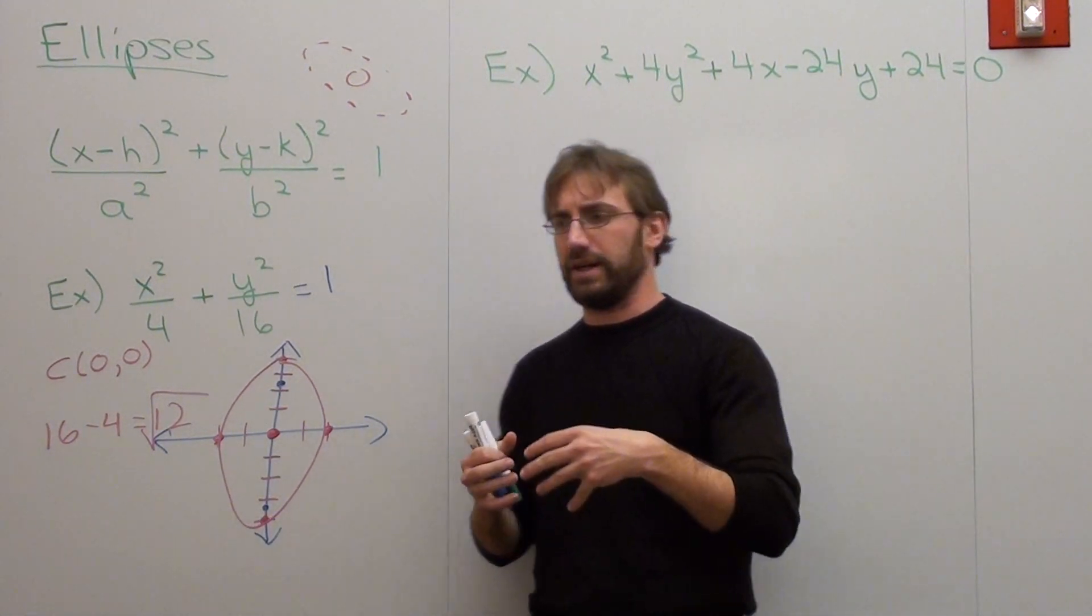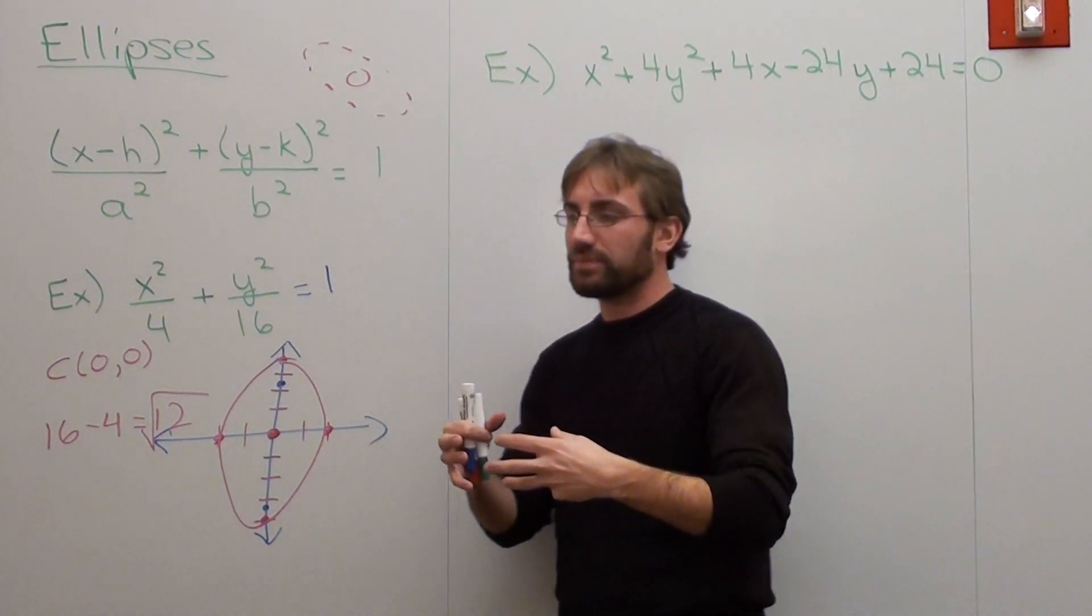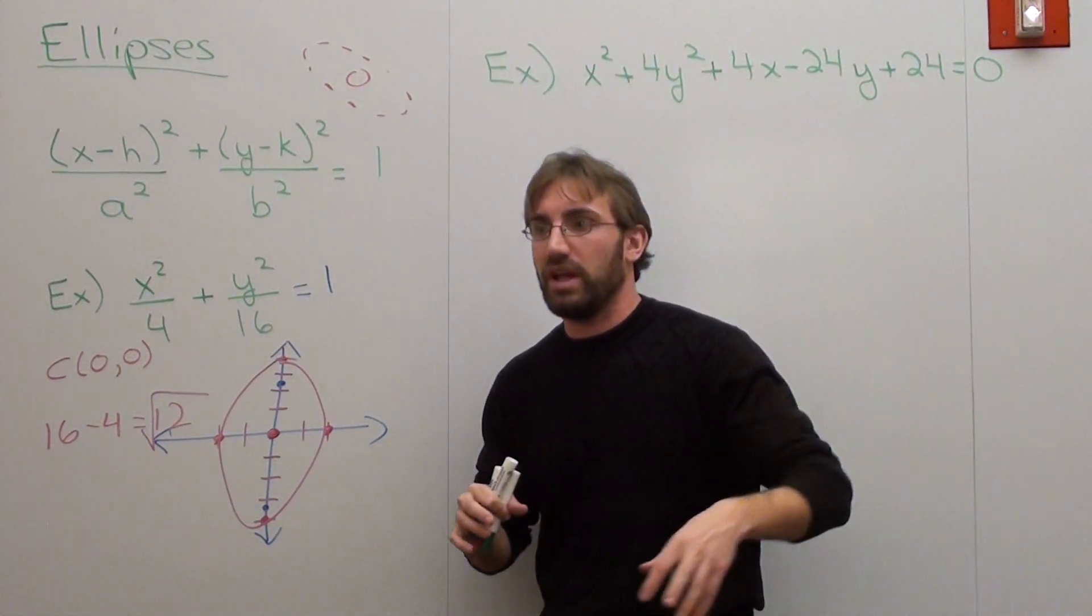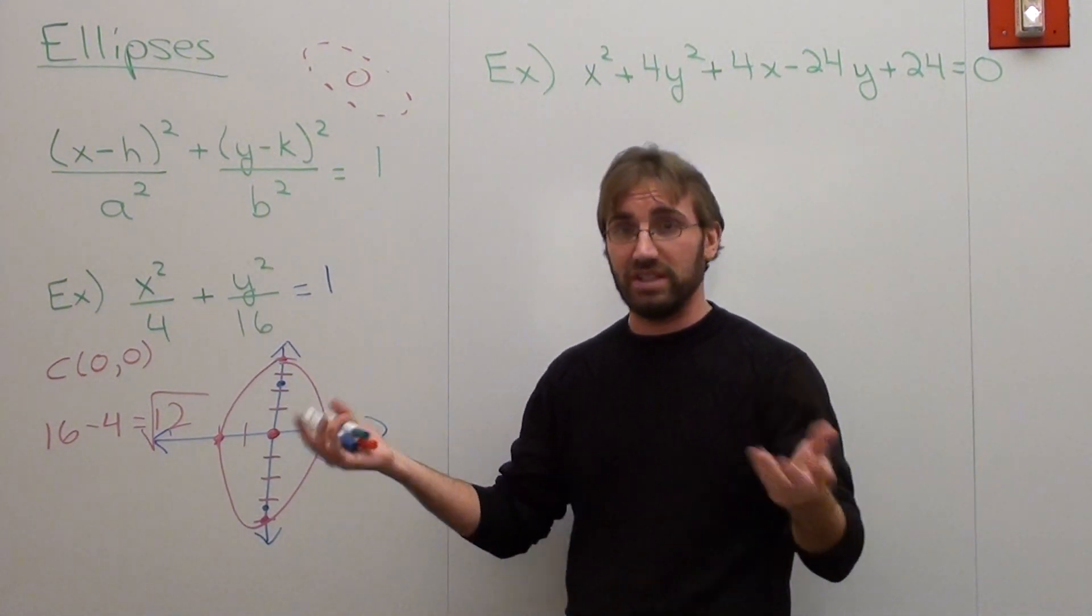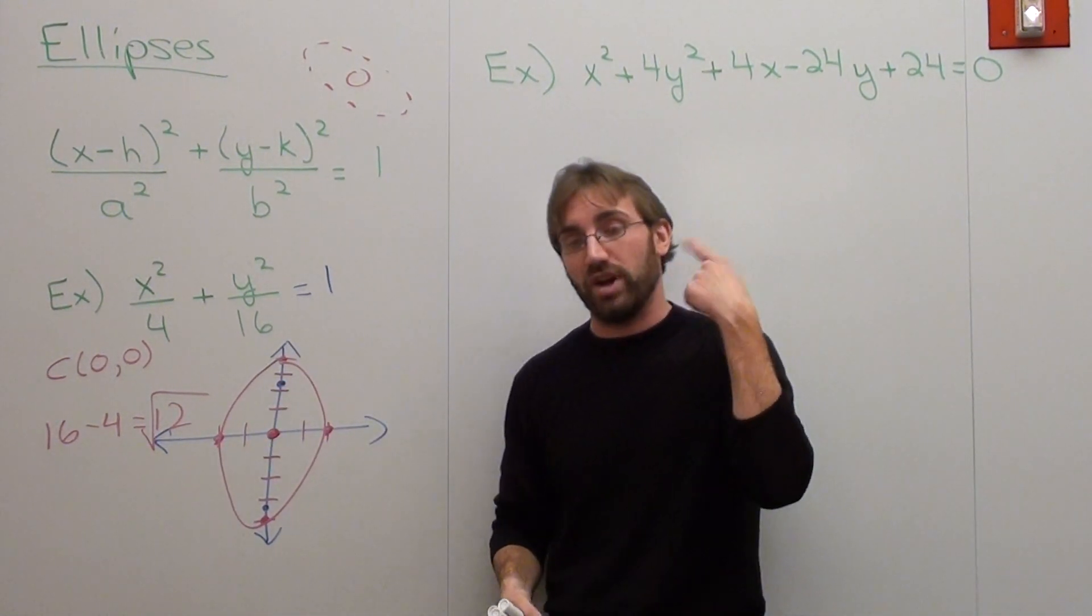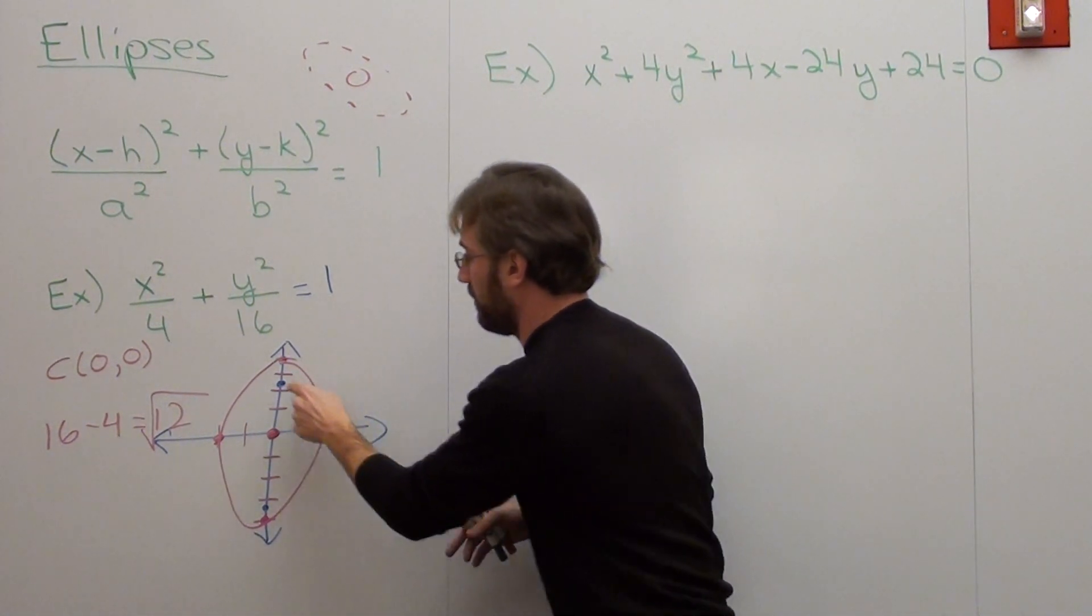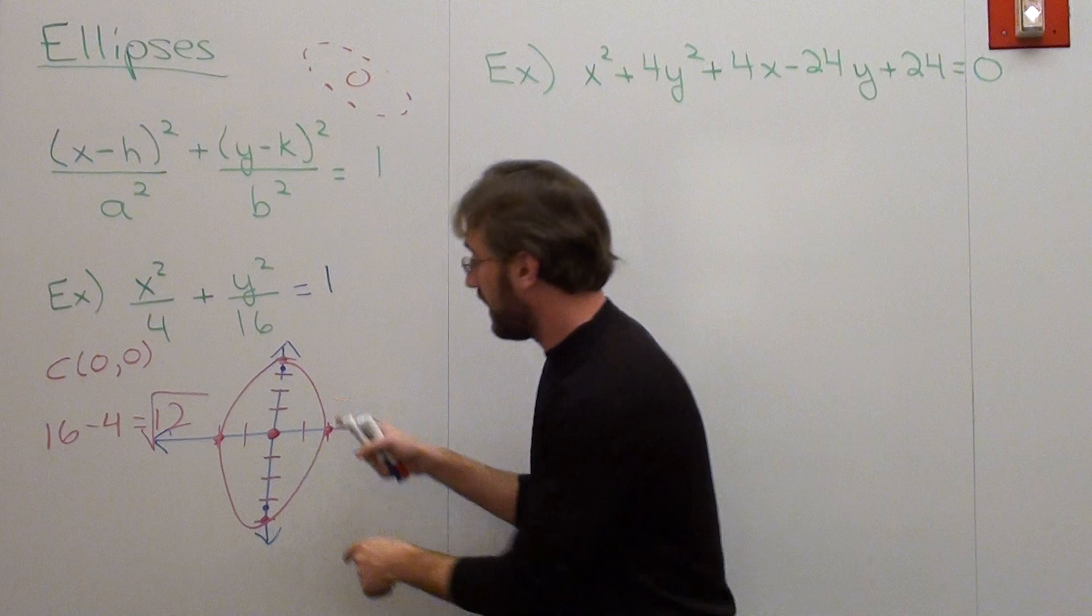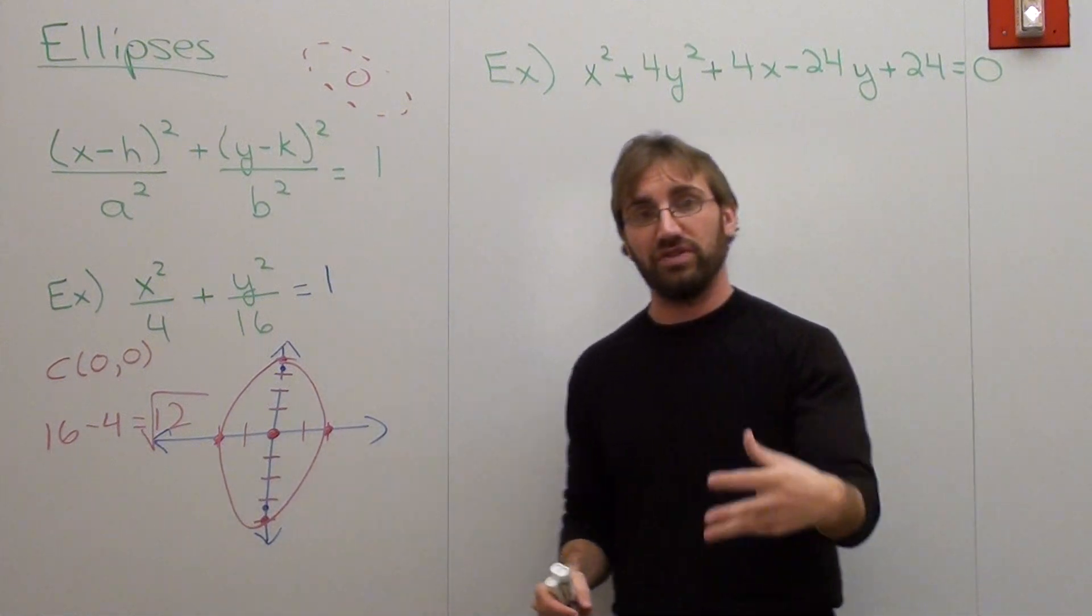And foci are actually pretty interesting. What they determine is, here's an example. If you're watching a football game, and two football teams are playing, and they're in the other team's end zone, the announcers will say, well, now they're in the end zone. Now the team can really hear the crowd. And that's why the defense tries to get the crowd to get on the side of the defense to try to distract the offense. Because sound will be heard best at the foci of an ellipse. So if you've got an elliptical stadium, you can hear sound best at the foci, which is very interesting.